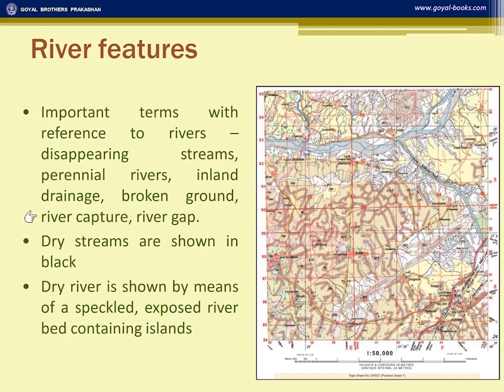River capture and river gap are connected with river erosion but may not be seen in dry regions. Dry streams are all shown in black on the map, indicating that the entire area receives seasonal rainfall.